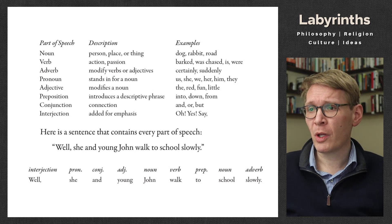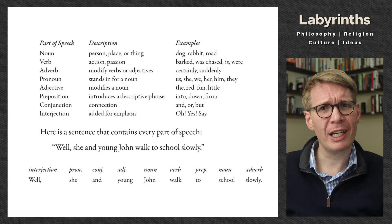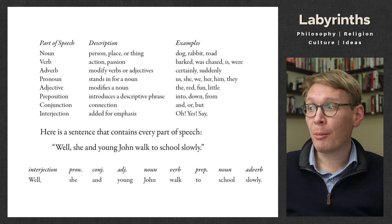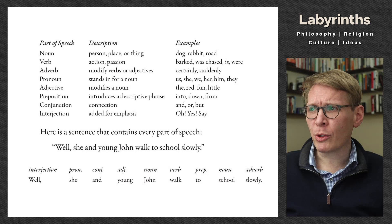Well, she and young John walk to school slowly. 'Well' is an interjection — it's not really adding to the meaning of the sentence, but it's adding to the tone. 'She and young John' gives us a pronoun, a conjunction, an adjective, and a noun. Then we have the verb, a preposition, and where they walk. We'll see how sentences are put together with subject, verb, and object presently.